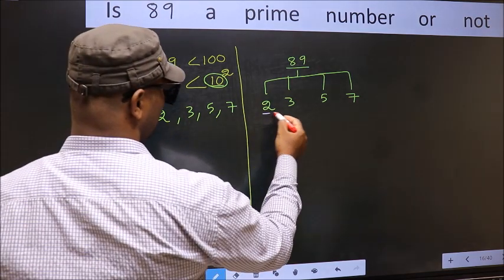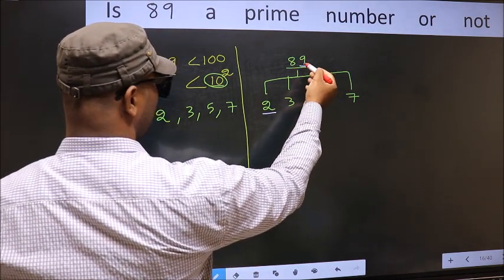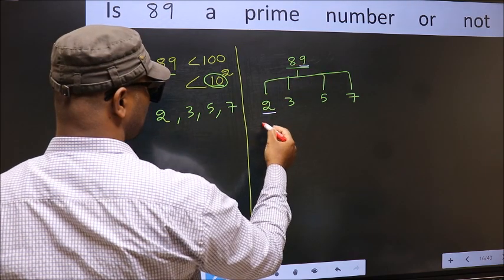Starting with 2. Last digit 9 not even. So this is not divisible by 2.